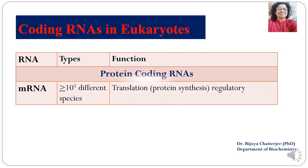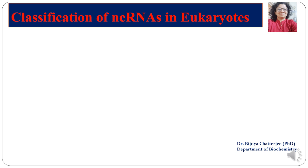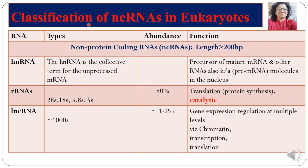Coding RNAs in eukaryotes are those RNAs which, when they undergo translation, form proteins. That RNA includes only one type — mRNA — and it has more than 10 to the power of 5 different species. All the rest of the RNAs are non-coding RNAs and these include hnRNA, which are the unprocessed mRNA and the precursor form of mRNA or other RNAs, found in the nucleus. Other non-coding RNAs include rRNA, which are of four types: 28S, 18S, 5.8S and 5S — they form the major bulk of RNAs found in eukaryotes, have a catalytic role, and are involved in protein synthesis.